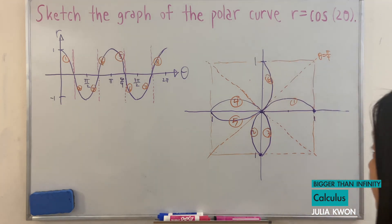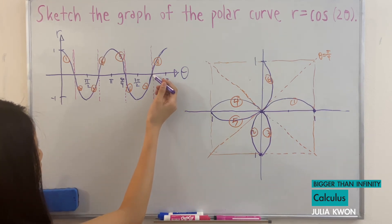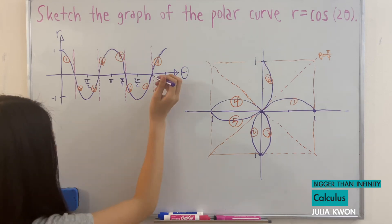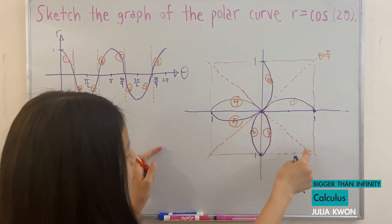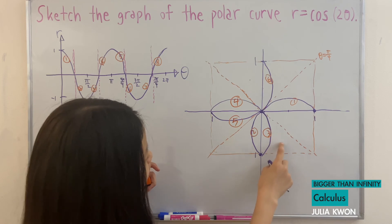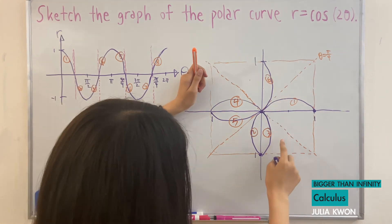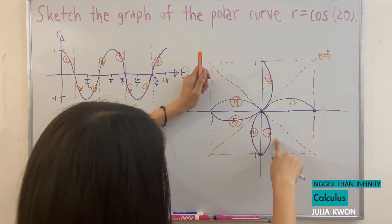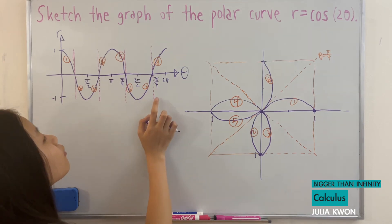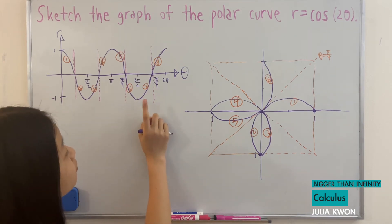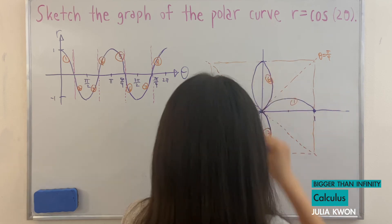For our seventh curve, theta is equal to three pi over two to seven pi over four. Three pi over two is here, and seven pi over four is here. We'd originally be working in this area, but since we're working with negative radius values, we work on the exact opposite side. As theta approaches seven pi over four, our radius gets larger and approaches zero. So that gives our seventh curve that looks like this.